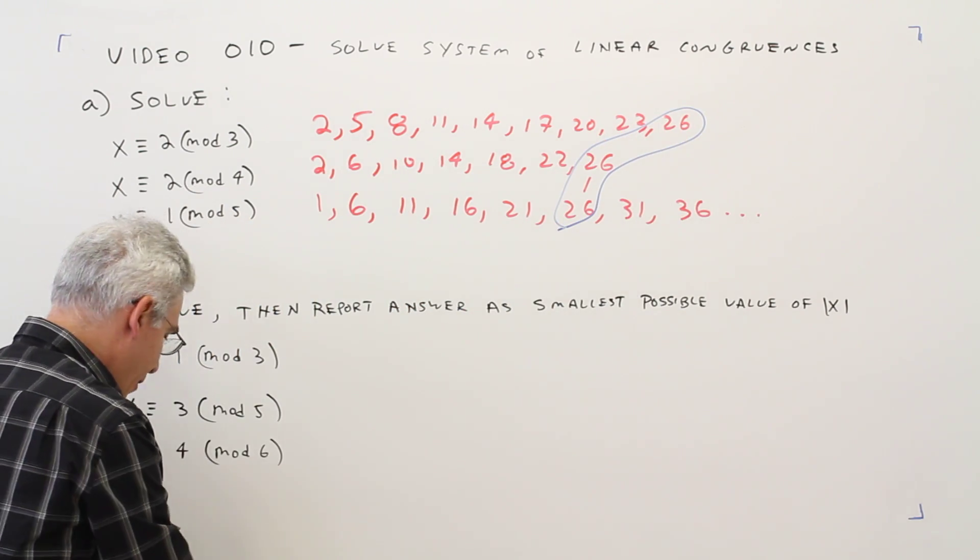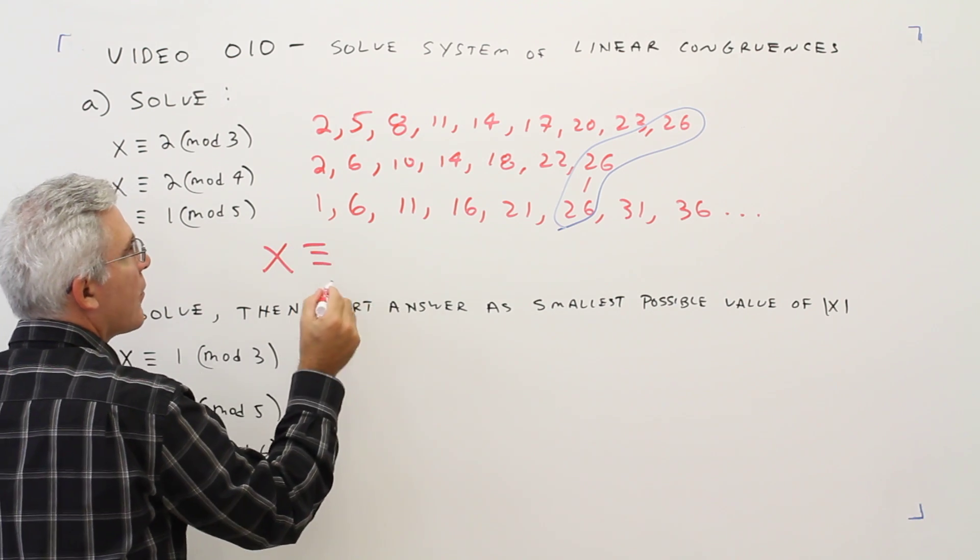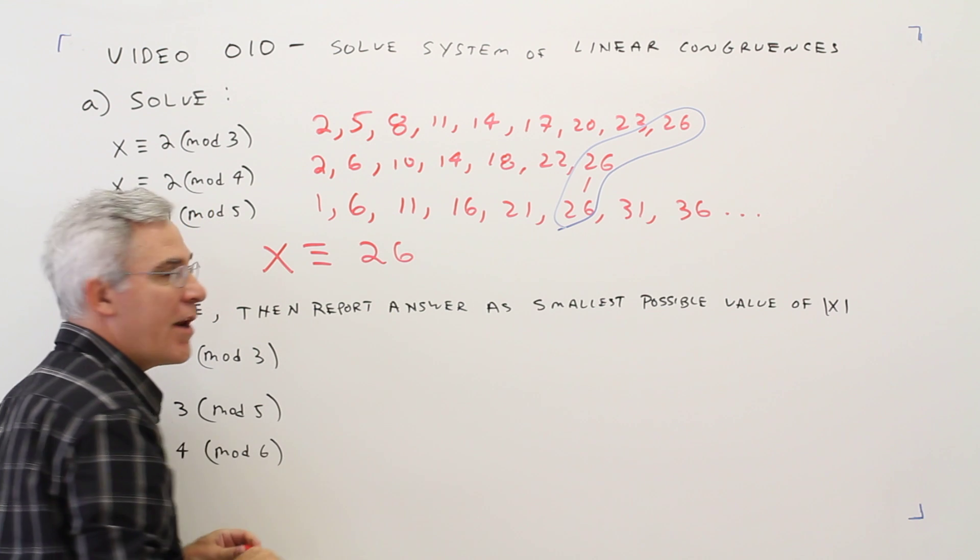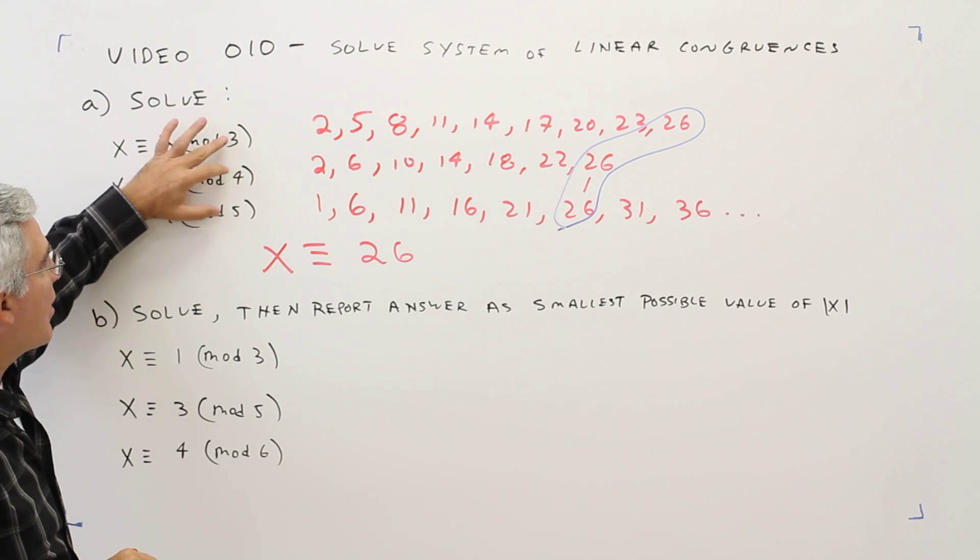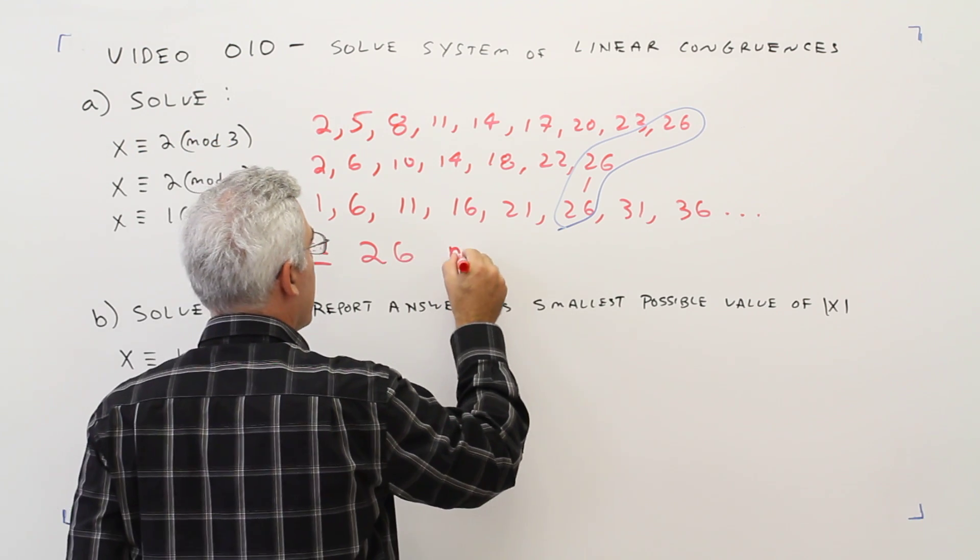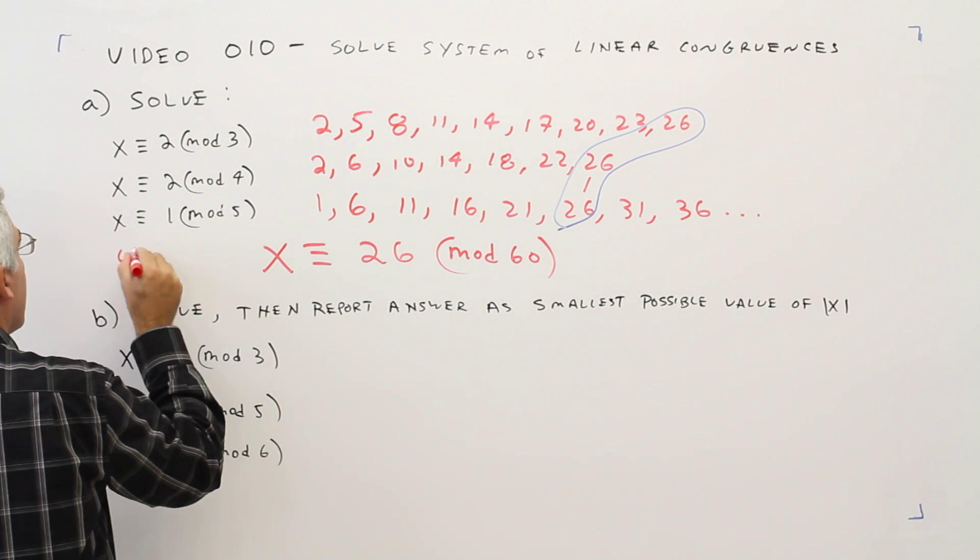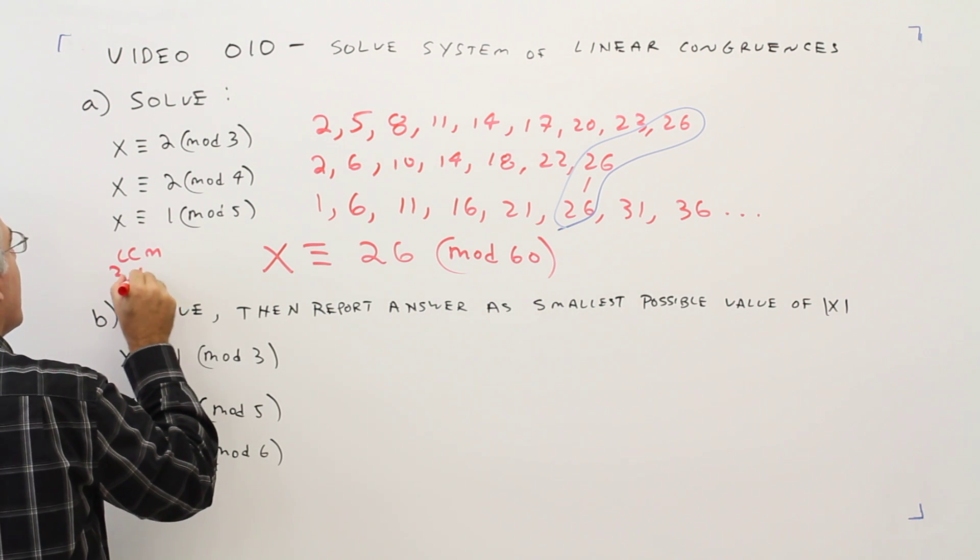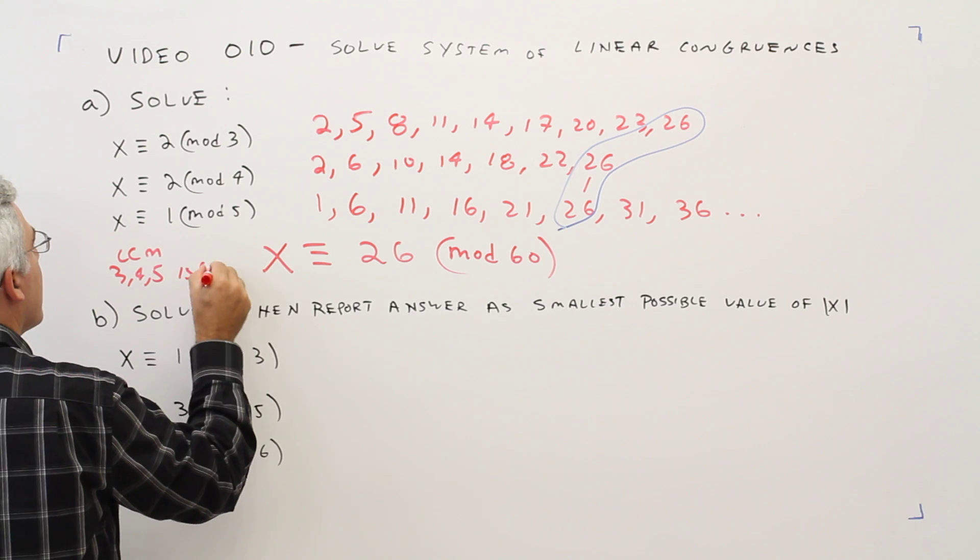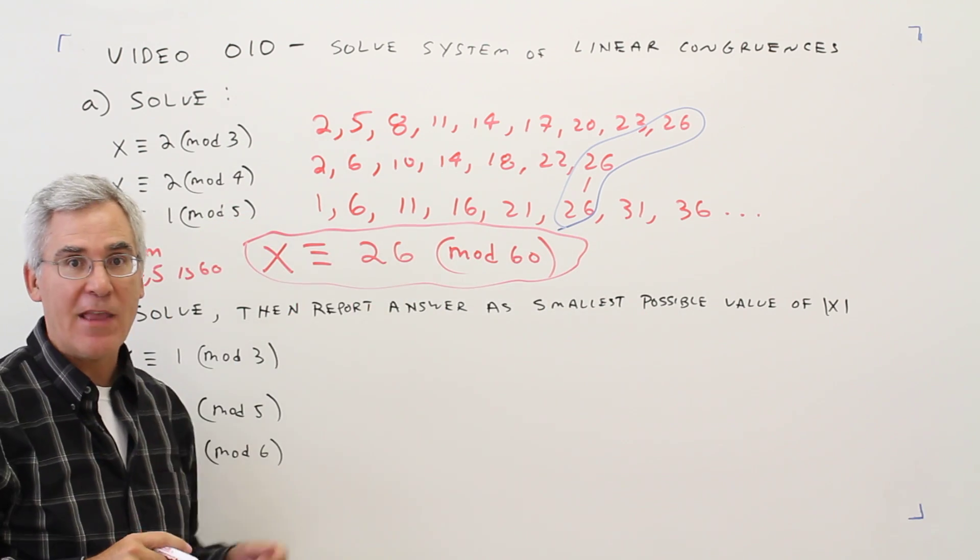So I'm going to write my answer as x is congruent to 26. The mod's going to be the LCM of these mods, which is 60. LCM of 3, 4, and 5 is 60. And that's the answer.